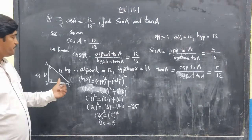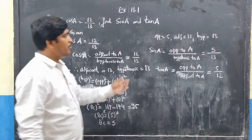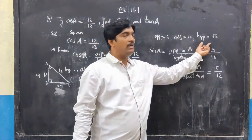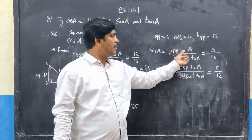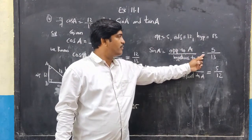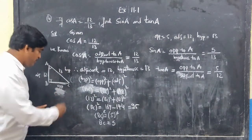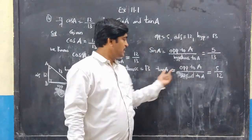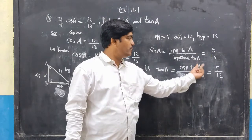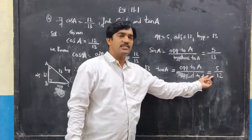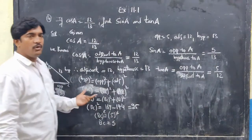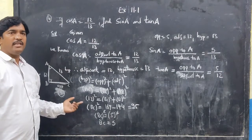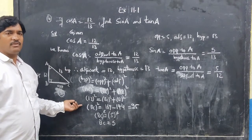Now with BC = 5, AB = 12, AC = 13: sine A = opposite to A / hypotenuse = BC/AC = 5/13. Tan A = opposite to A / adjacent to A = BC/AB = 5/12. This is how we solve the problem when trigonometric ratio values are given directly.